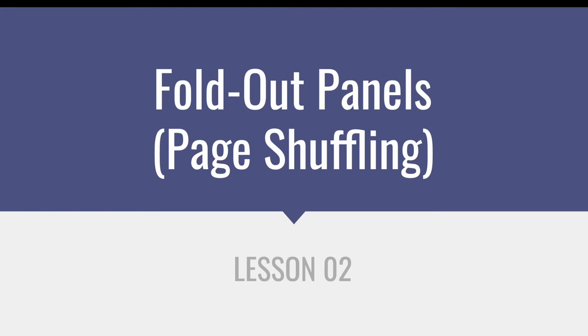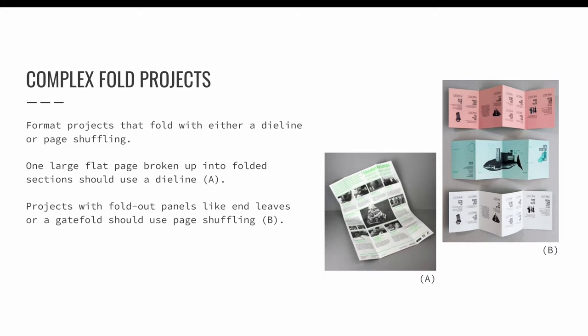Lesson two: fold out panels and page shuffling. Projects with complex folds are formatted in InDesign in one of two ways. We learned that complex folds can be designed as one large flat page broken up into folded sections using a die line to communicate where the project needs to fold. Alternatively, projects with fold out panels like end leaves on a book or gate folds on a magazine can be set up using page shuffling in InDesign to physically move pages into place where they will be located in the finished project.